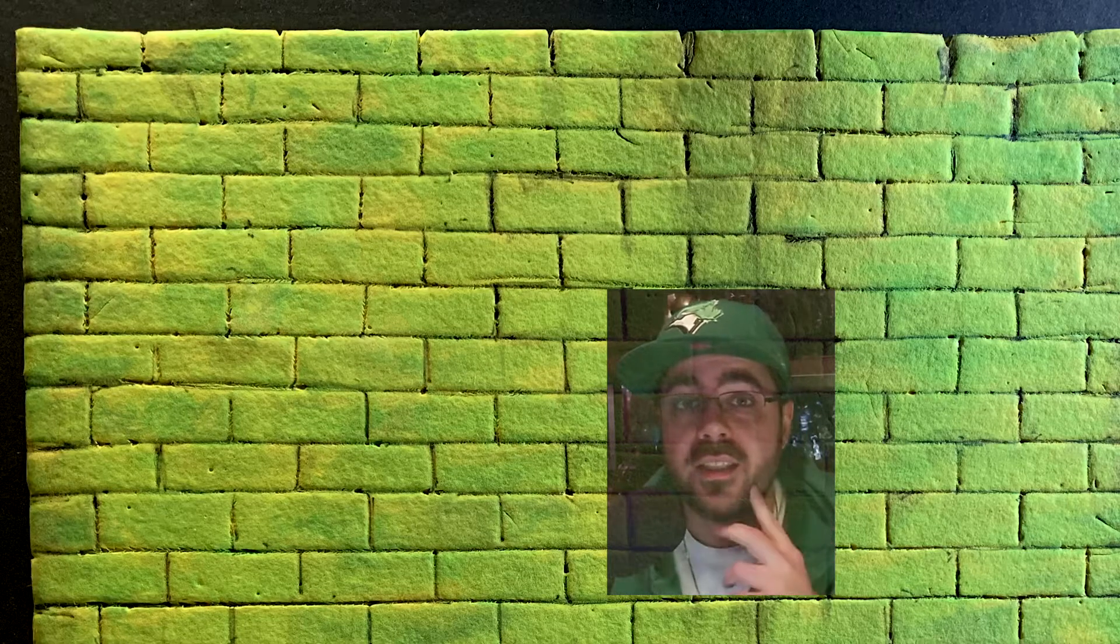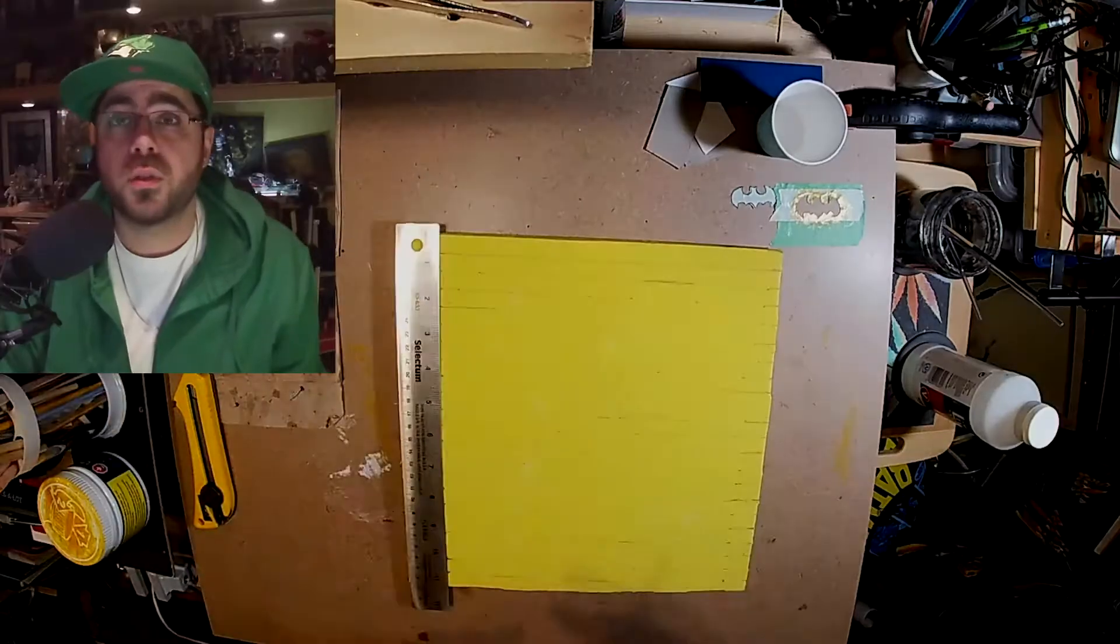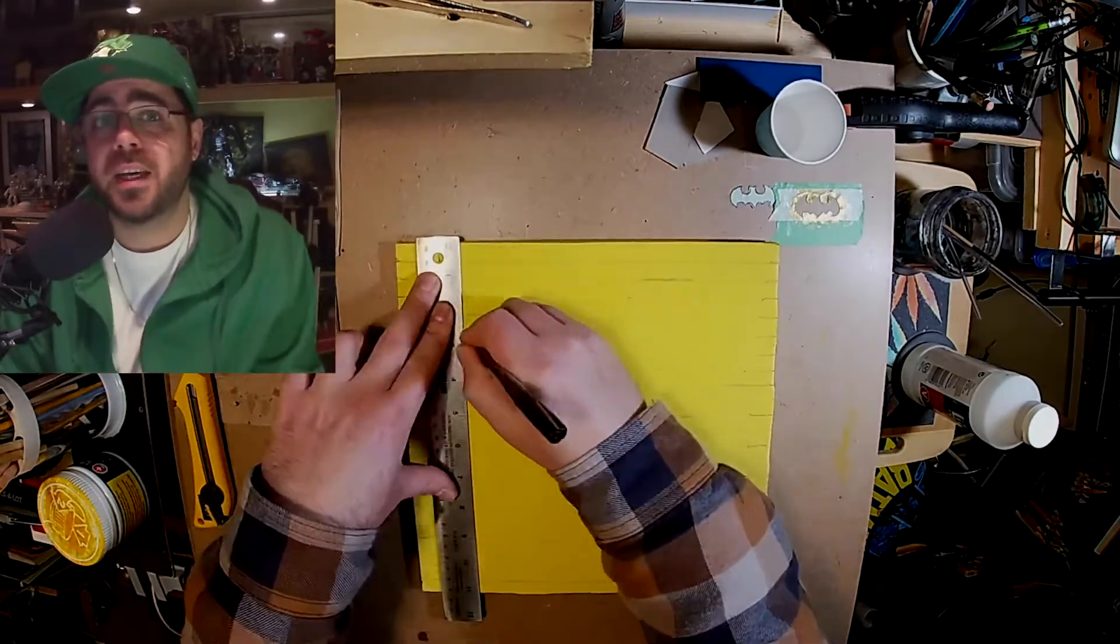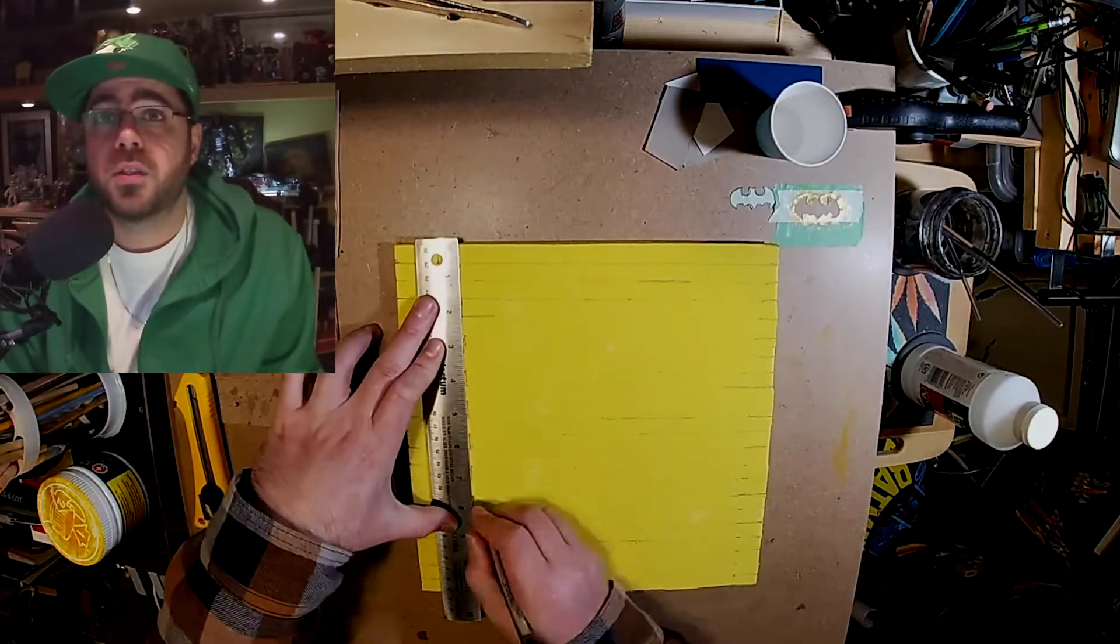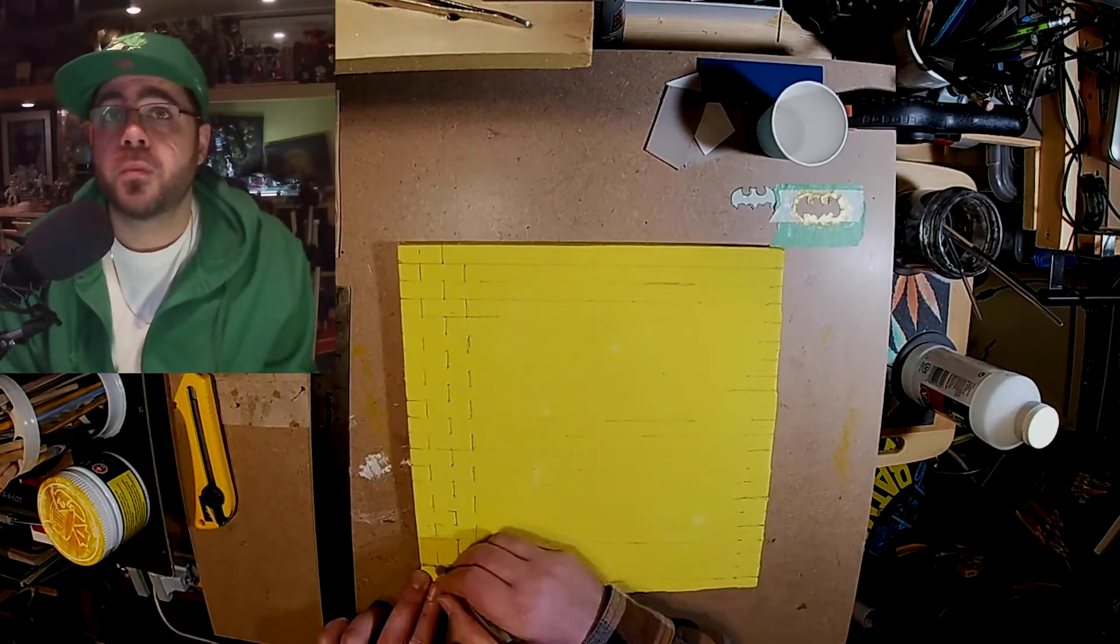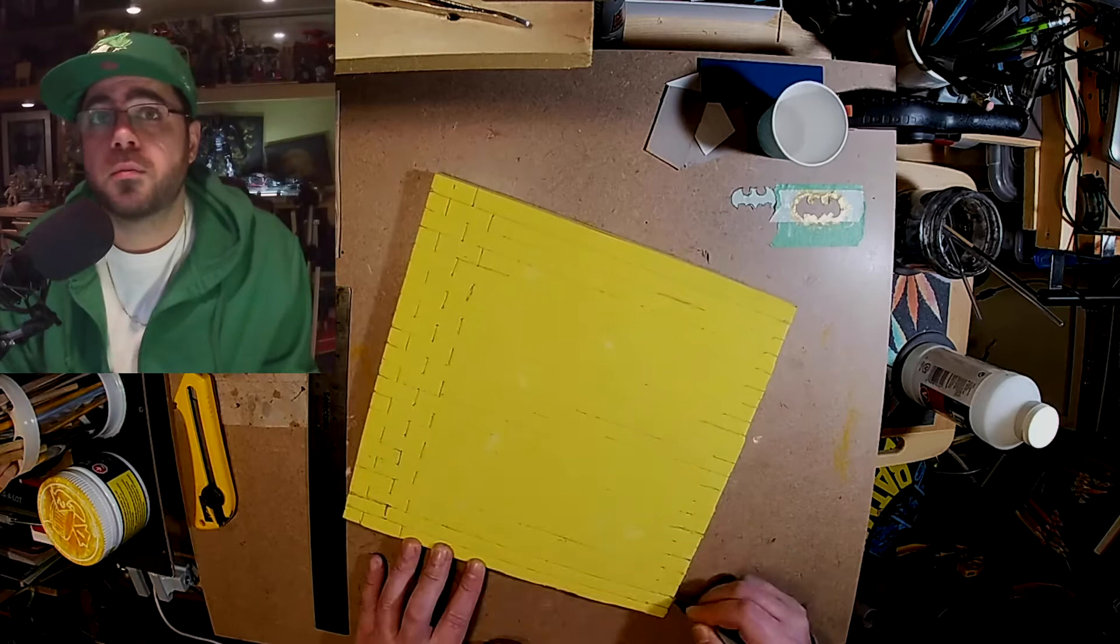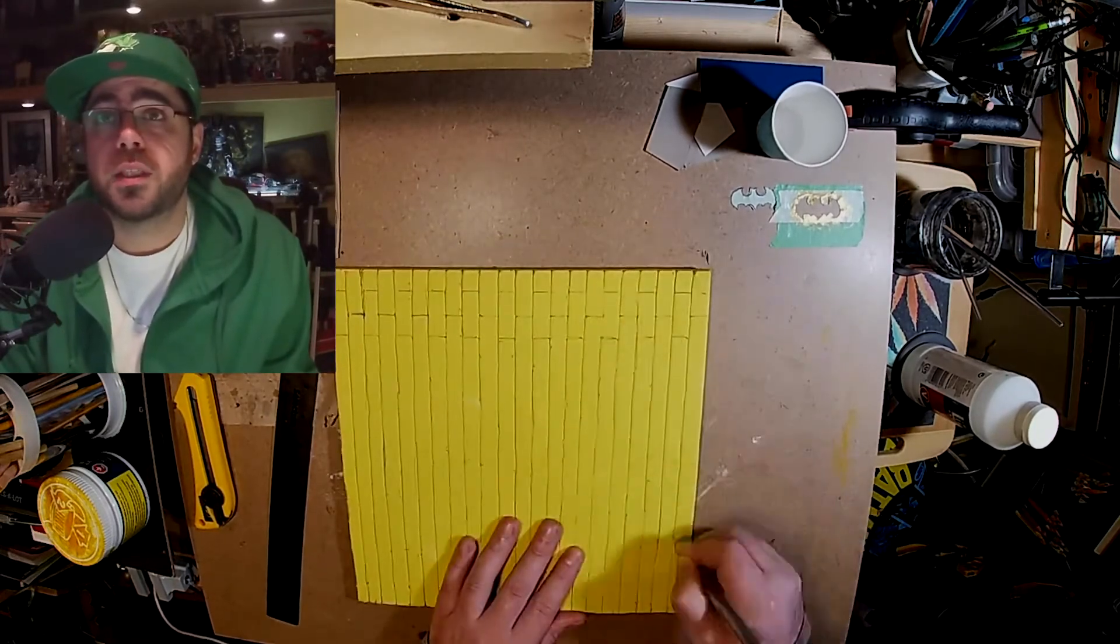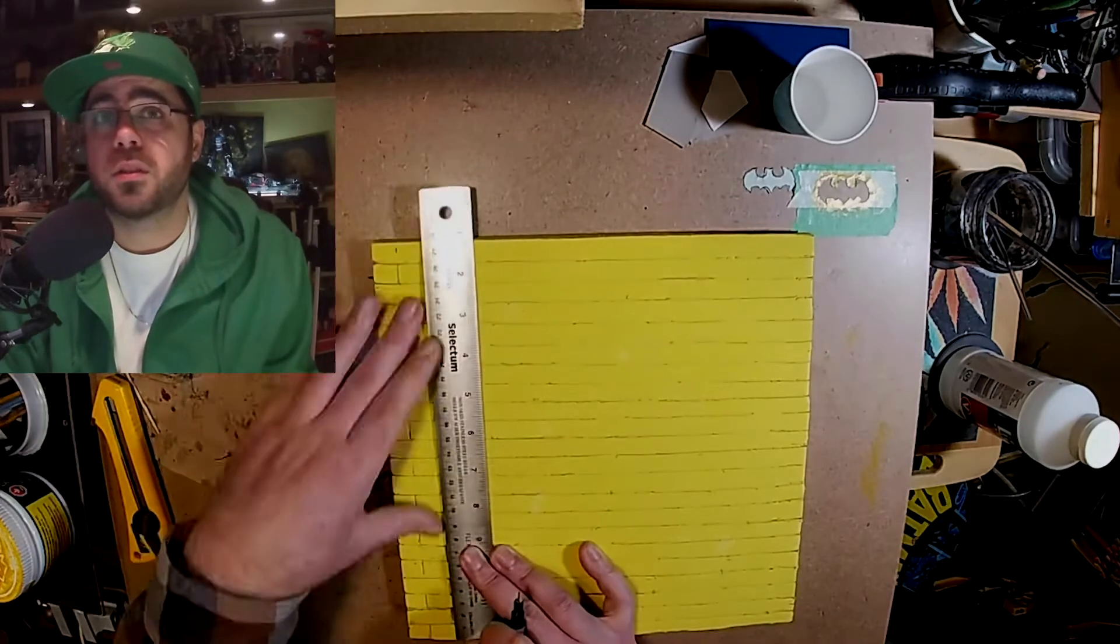What's up guys, in this episode of the On Green Show I'm gonna make a green six-scale wall. I'm laying out the bricks - one quarter by one and one quarter inches for each brick.